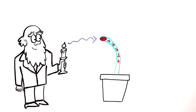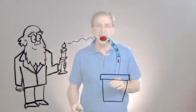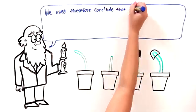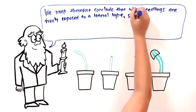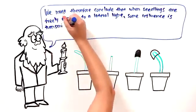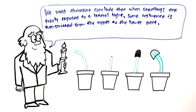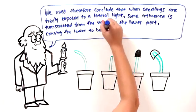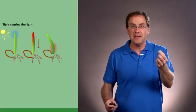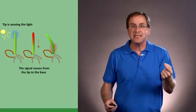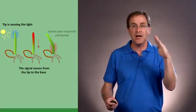So Darwin concluded that a signal moves from the tip to the base. In his own words, we must therefore conclude that when seedlings are freely exposed to lateral light, some influence is transmitted from the upper to the lower part, causing the latter to bend. Again, that's very verbose. What's he saying? That we must conclude that there is some way that the tip is sensing the light, is transducing a signal to the lower part, which is causing it to bend.